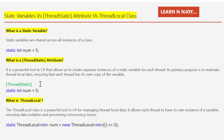By decorating with the ThreadStatic attribute, it allows us to create separate instances of a static variable for each thread. For example, 'static int num = 5' decorated with the ThreadStatic attribute — that's how we define a thread static variable.